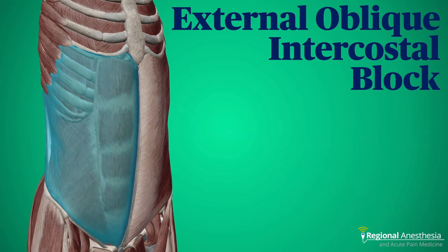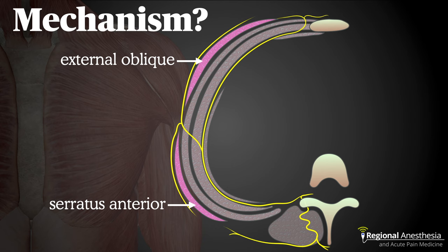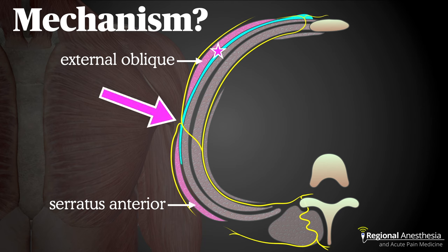The idea behind this block is that a needle is advanced from above and local anesthetic deposited deep to the external oblique at the sixth or seventh rib. It will then spread to anesthetize both the lateral cutaneous and anterior cutaneous branches of the intercostal nerves of T6 to T10. Here's a schematic of the intercostal nerve running deep to the internal intercostal muscle and giving off a lateral cutaneous branch before terminating near the sternum. External oblique and serratus anterior lie superficial to the ribs and intercostal muscle, and at the point where they come together, the lateral cutaneous branch pops out to innervate both the anterior lateral and posterior lateral trunk. The injection for this block occurs between external oblique and the chest wall. The local anesthetic will spread extensively, running posteriorly to catch the lateral cutaneous branches in the same way a deep serratus plane block does, but it also runs anteriorly, catching the anterior cutaneous branches.